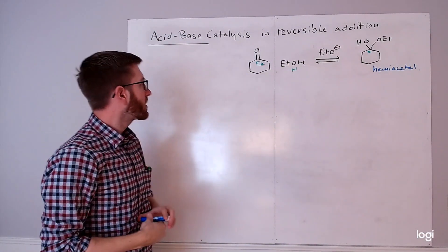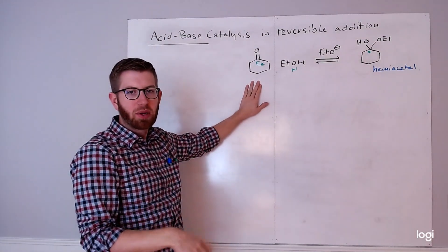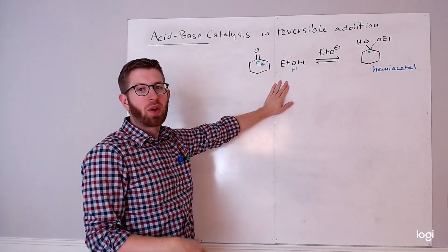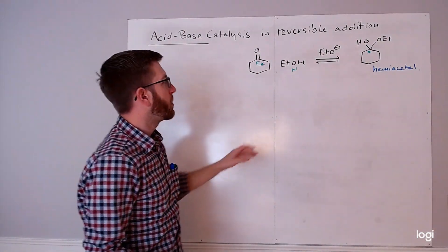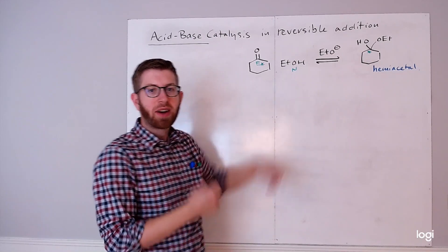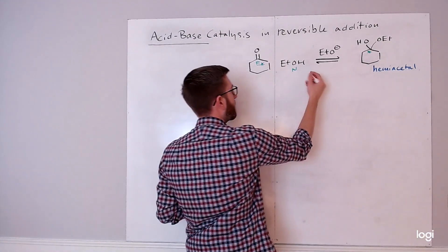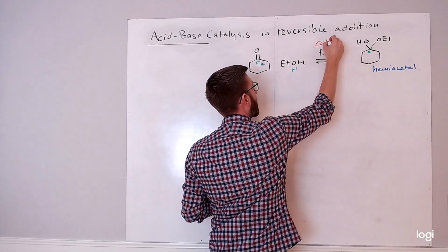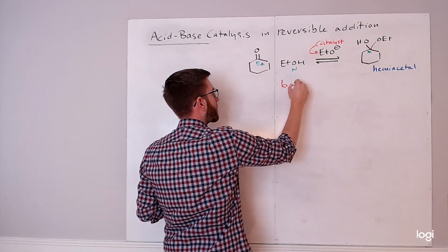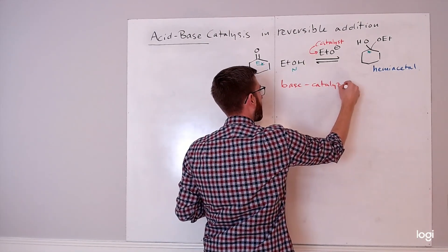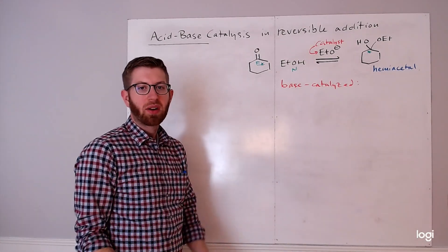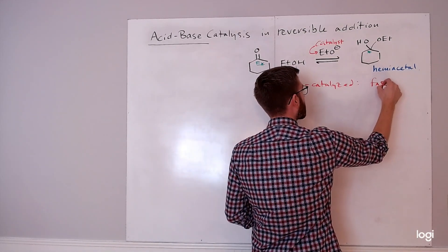We have an okay electrophile — ketones are kind of in the middle of our series of electrophilic carbonyls — and not a particularly good nucleophile. One way we could make this reaction go faster is by introducing a base. We could use hydroxide or the conjugate base of our solvent/nucleophile. Using this compound in catalytic amounts would make the reaction base-catalyzed, using a better nucleophile while keeping the electrophile the same. So: faster reaction.